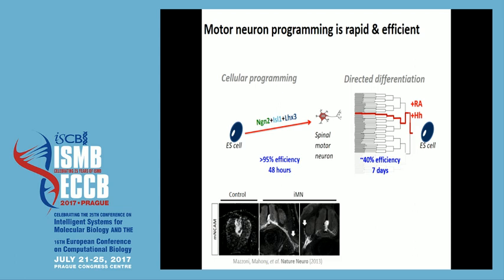We also have single cell data showing that the conversion process is quite linear, uniform, and we think synchronous. Because of the high efficiency and this uniformity, we think this is quite a good model of trans-differentiation — of direct conversion of cell fate via the overexpression of transcription factors.